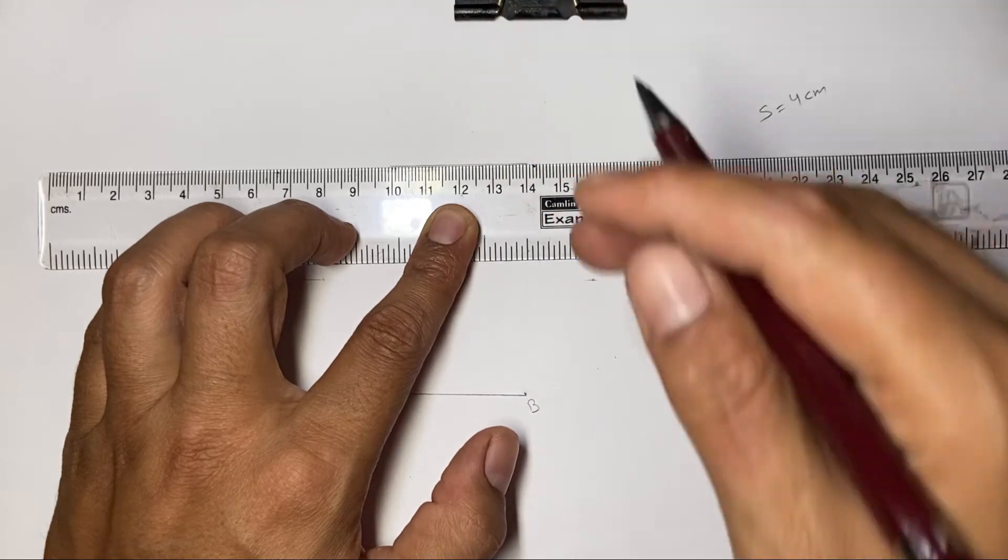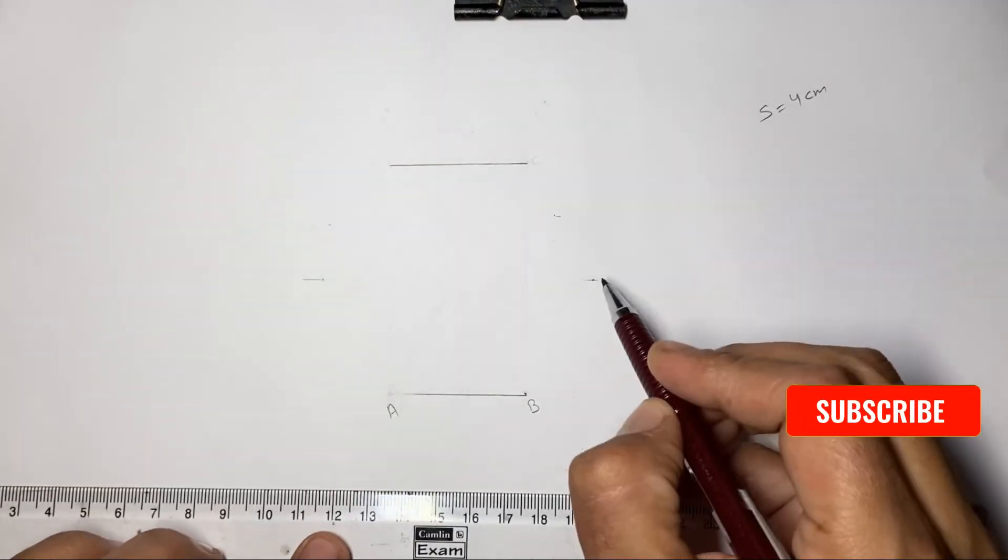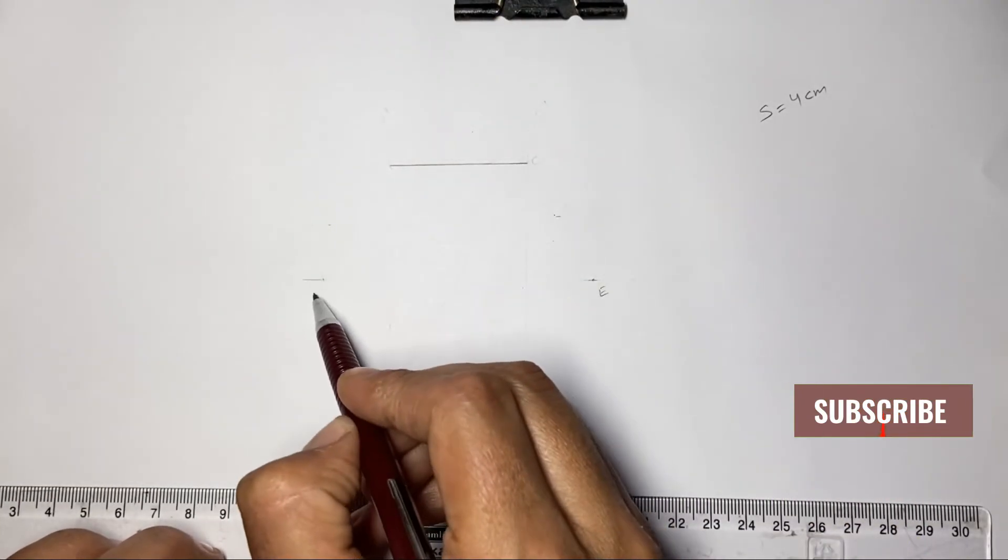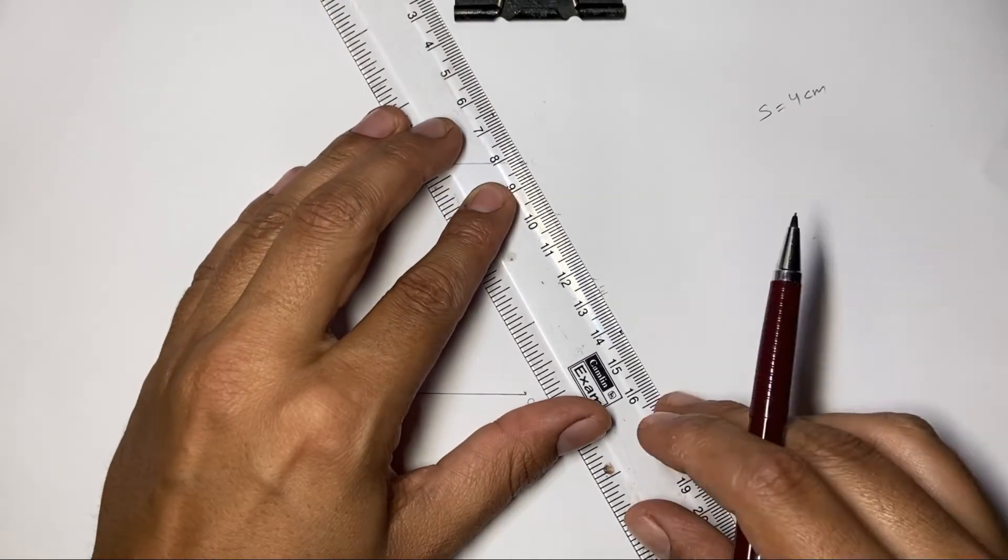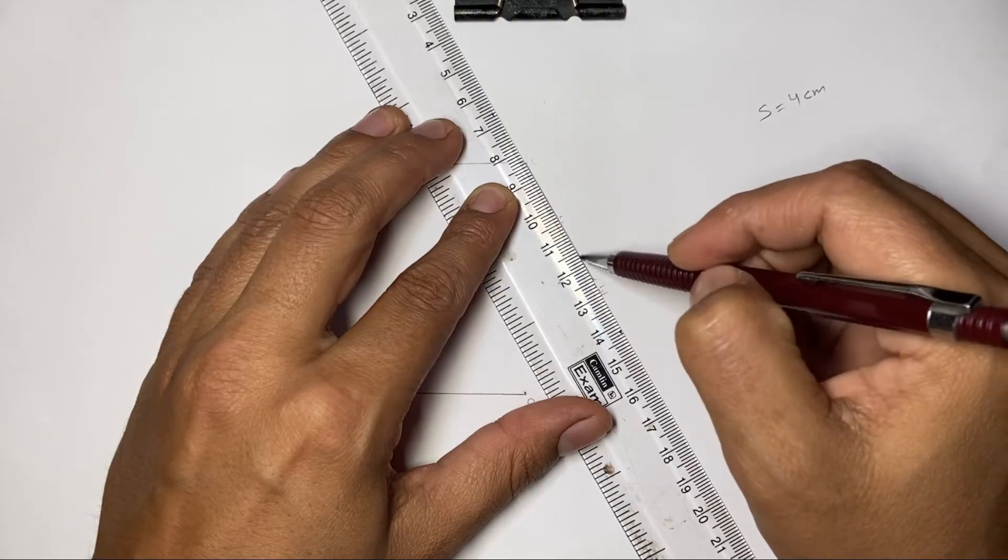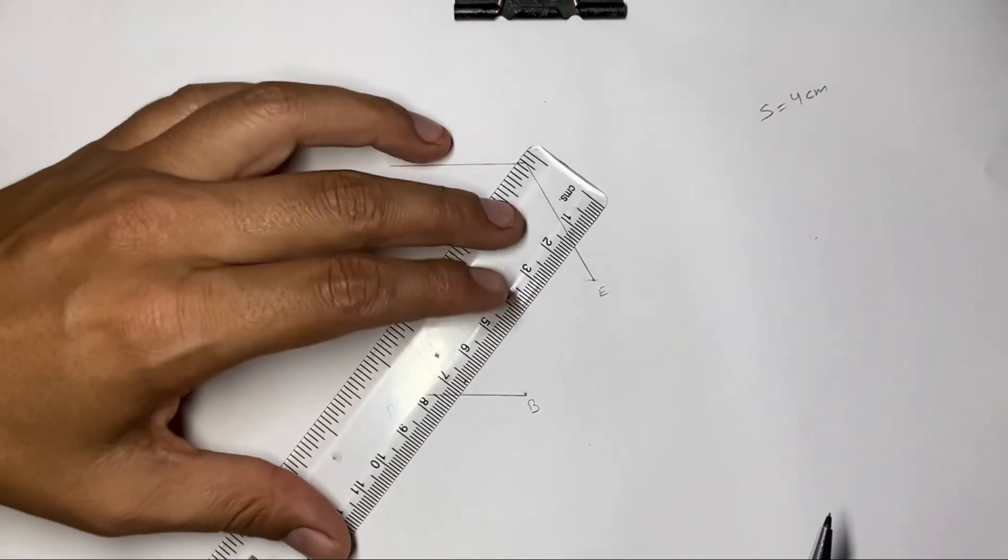Sorry, C and D. Now let us name this point E and this point F. Now connect C to E and E to B.